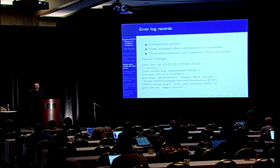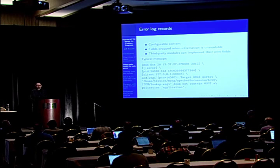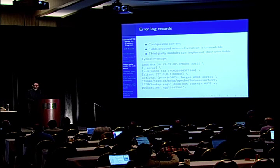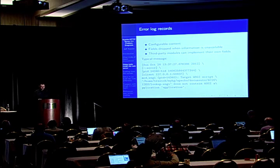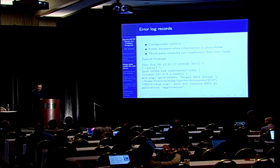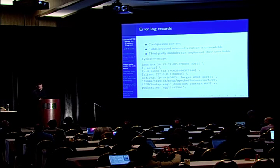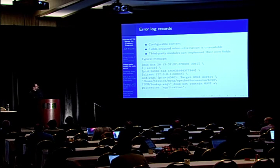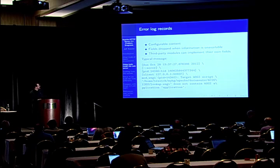In 2.4, the error log is configurable. Modules can implement their own fields in the error log, and when information is not available for a certain field, that field can be dropped altogether. Here is a typical message with a timestamp with sub-second precision. We have the module ID — where you see that hyphen-colon error, that's actually mod-wsgi — and also pid, thread-id, et cetera.